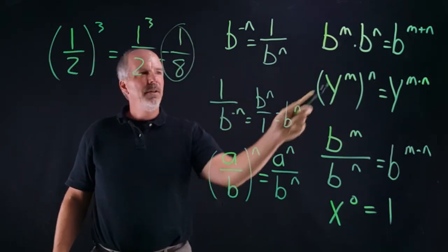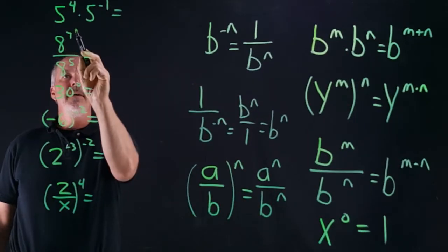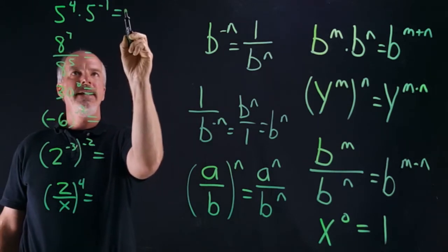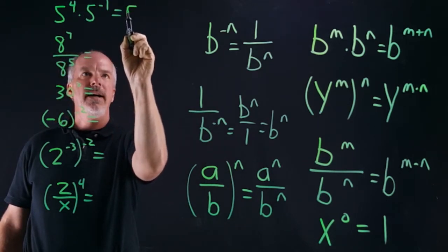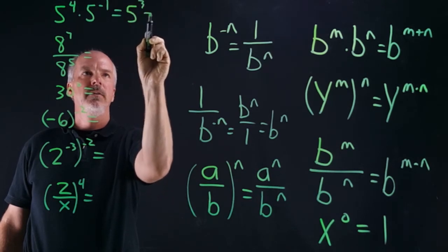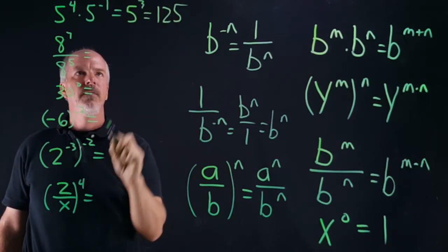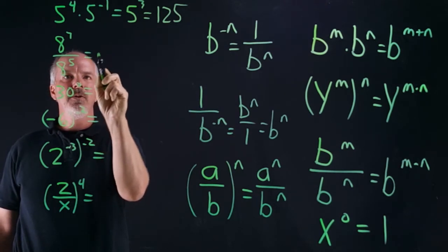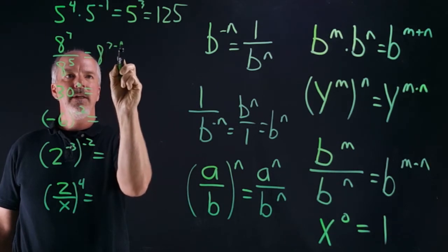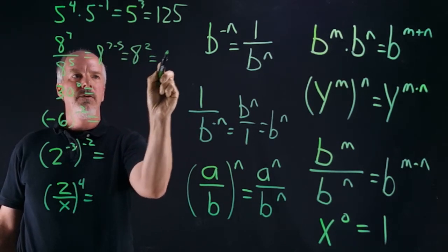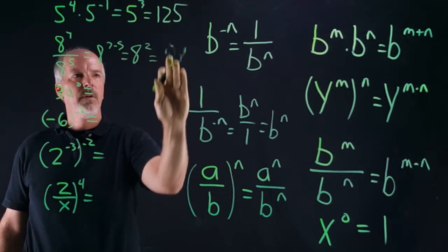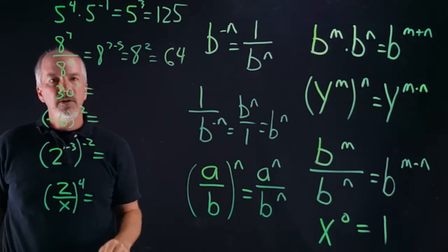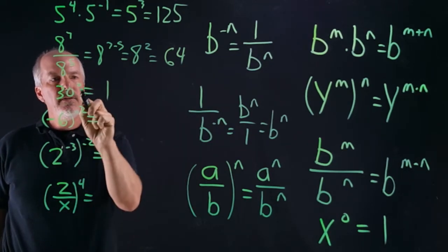Let's do a few more problems using these rules. Five to the fourth times five to the negative one — we add four and negative one and get five to the third, which equals 125. Eight to the seventh divided by eight to the fifth — we subtract, so eight to the seven minus five equals eight to the second, which equals 64. Thirty to the zero — anything to the zero power is one.